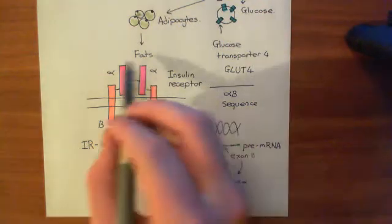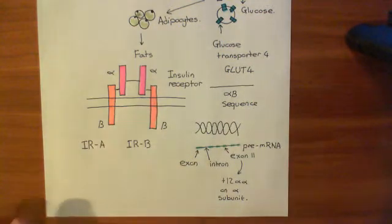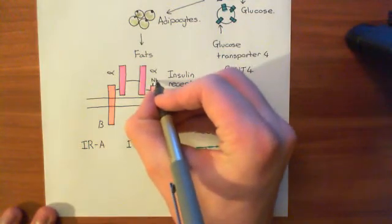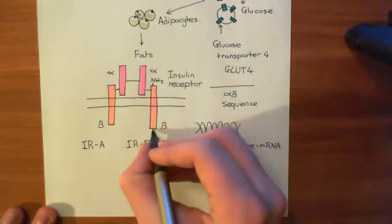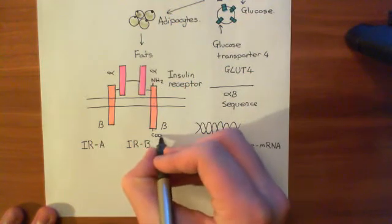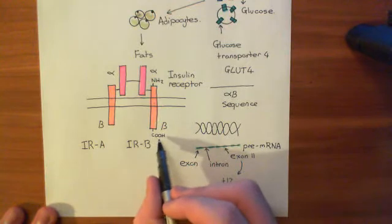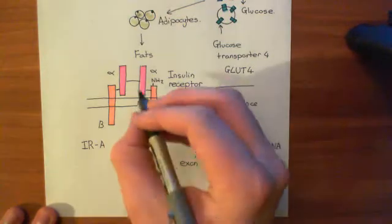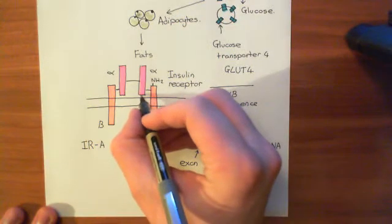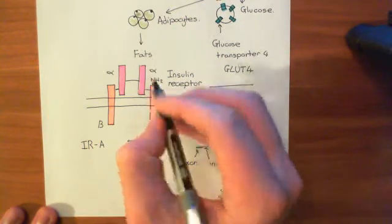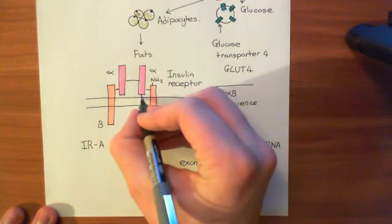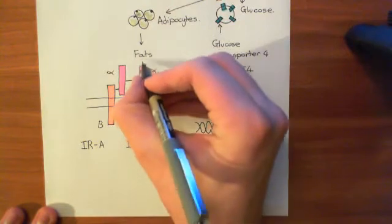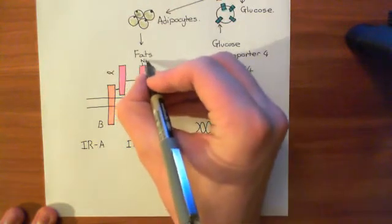Adding a little more detail to our picture: the amino terminus of the beta subunit is extracellular and the carboxyl terminus is intracellular. Similarly for the alpha subunit, which is completely extracellular — the side facing towards the membrane is the carboxyl terminus and the top side is the amino terminus.